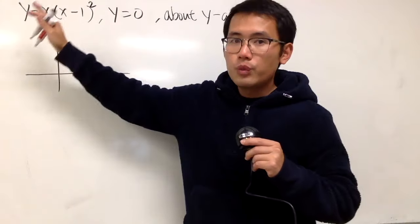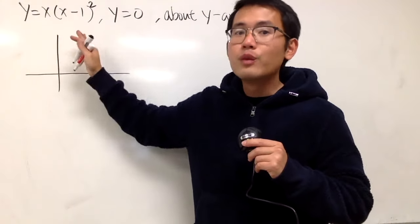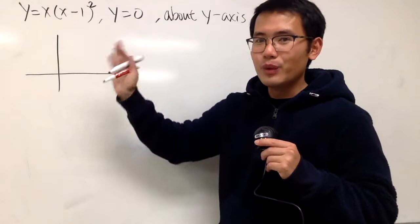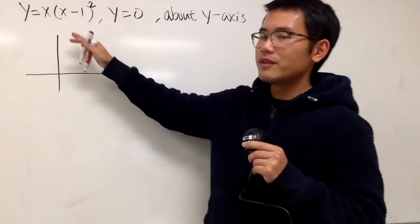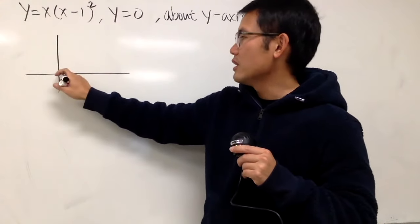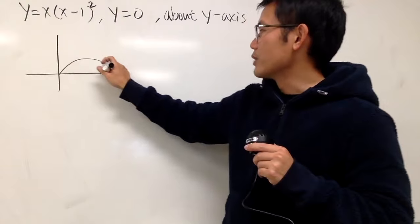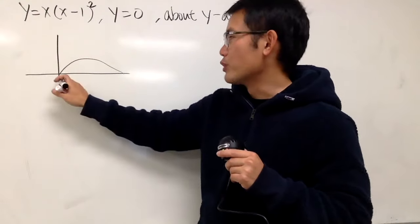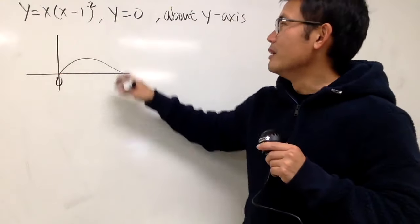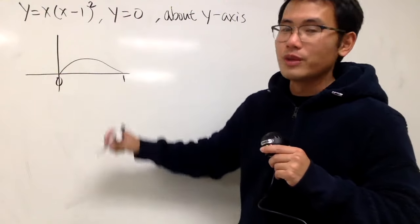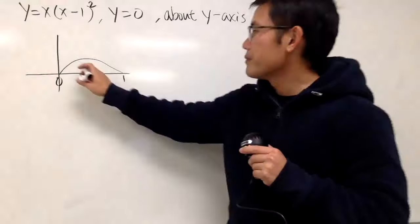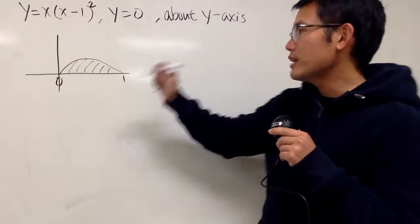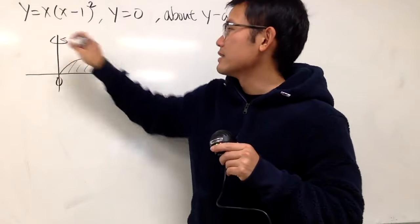When x is 0, y is 0. When x is 1, y is also 0. It's a cubic curve — you can plug in 0.2 or any value and you'll get a curve that looks like this. So it's a cubic curve, and this is the portion we care about, from 0 to 1, because we care about when y equals 0.